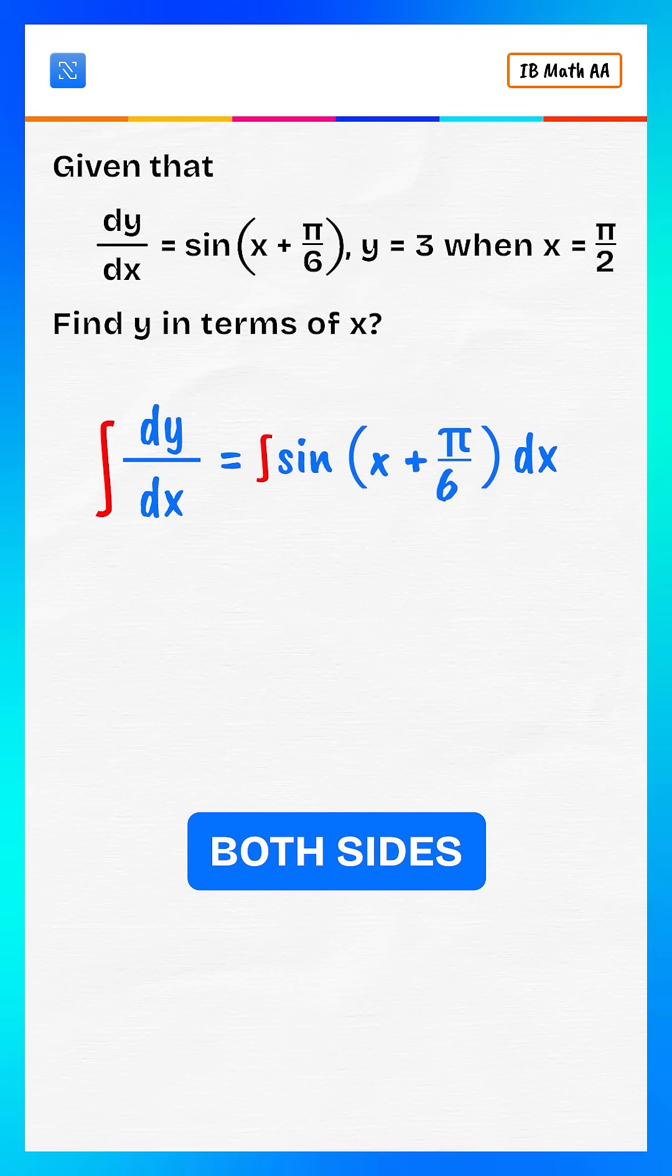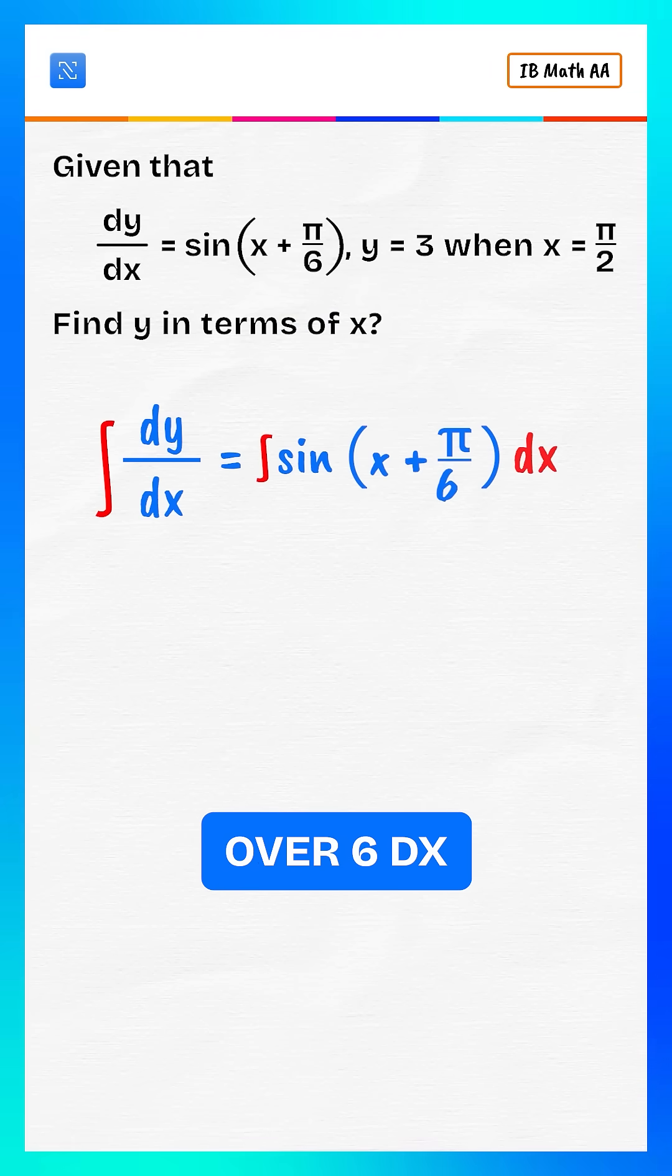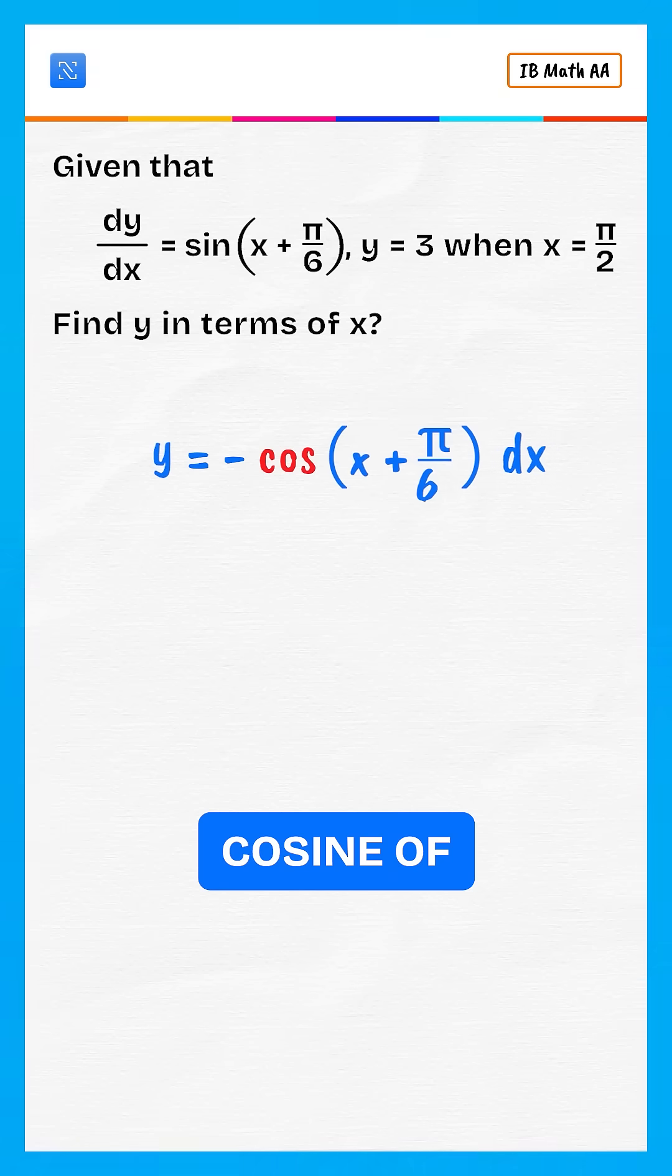To find y, integrate both sides. Integral sine of x plus pi over 6 dx gives us negative cosine of x plus pi over 6 plus c.